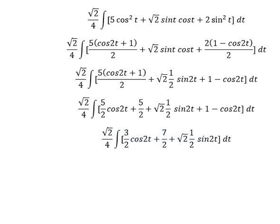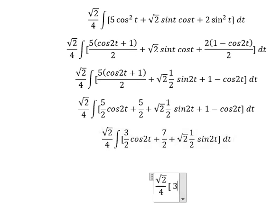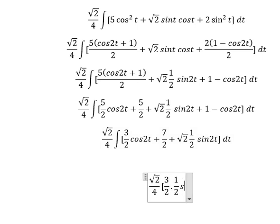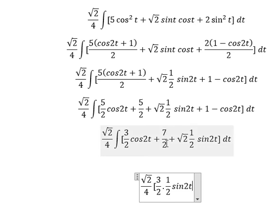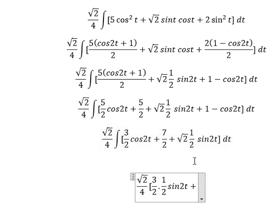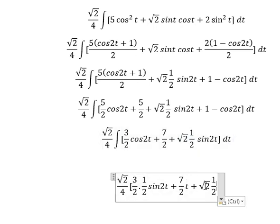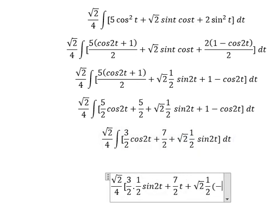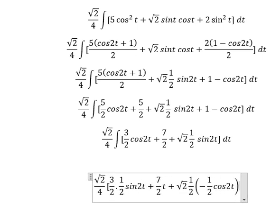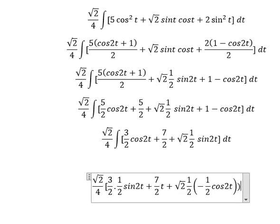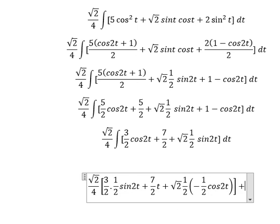Now we can get the final answer. The integral of cos(t) gives sin(2t) multiplied by 1 over 2. The integral of cos(t) gives t. And the last term is negative 1 over 2 times cos(t). We put the constant C here.